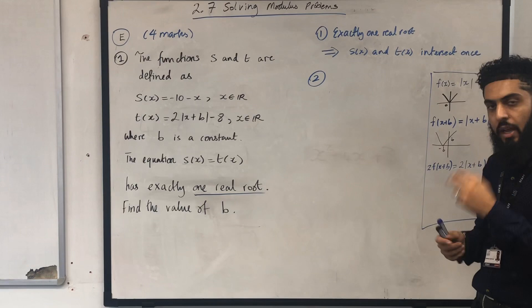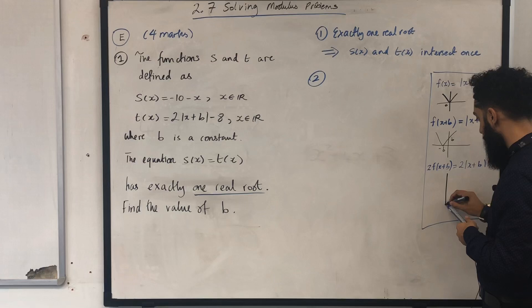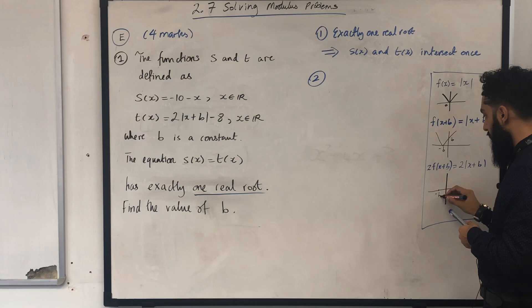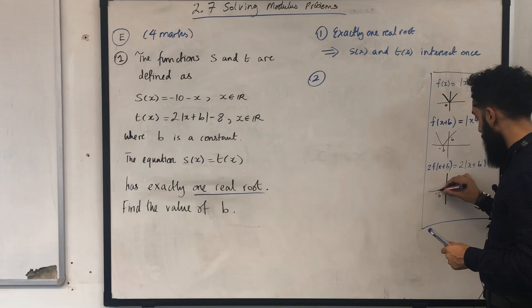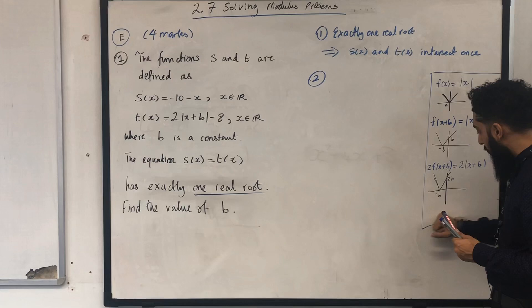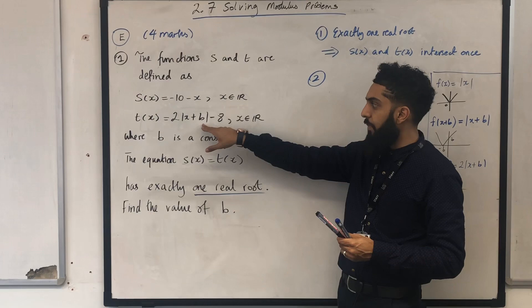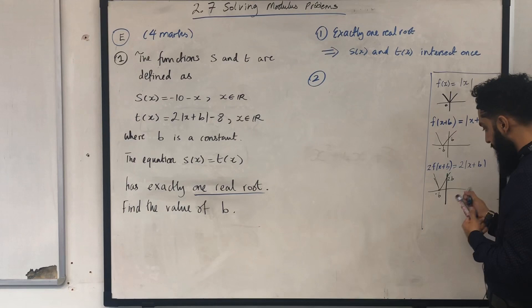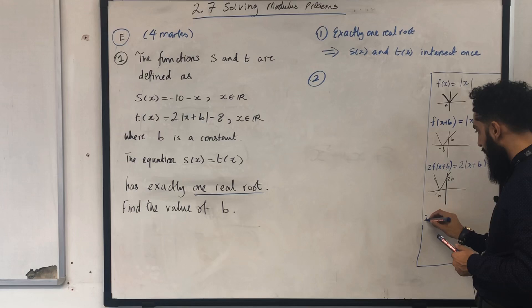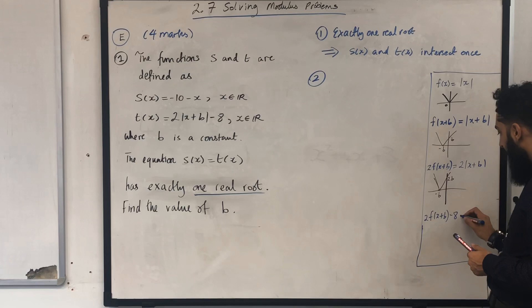This transformation takes f of x plus b and multiplies the y-coordinates by 2 while the x-coordinates stay the same. So the x-coordinate minus b stays the same, and the y-coordinate b gets multiplied by 2 to give 2b. Now I want 2 modulus of x plus b minus 8. I look at 2 f of x plus b minus 8, which in modulus form gives me 2 modulus of x plus b minus 8.